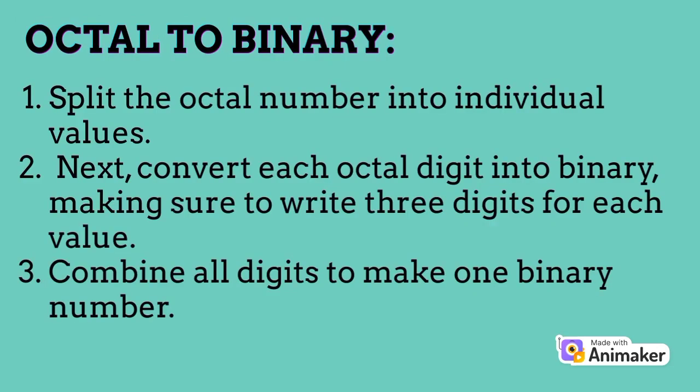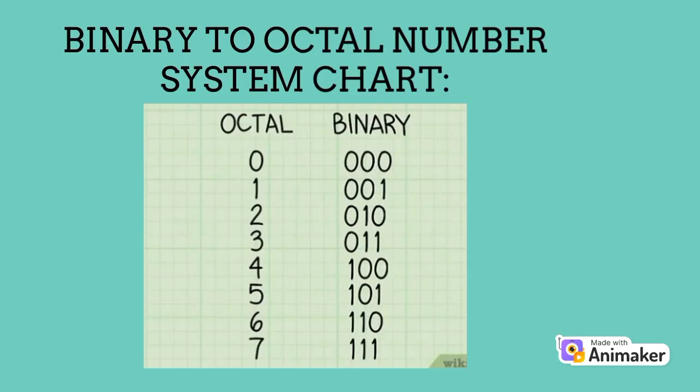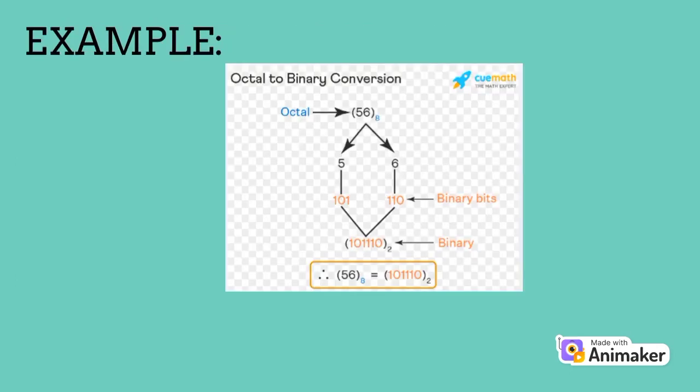Octal to binary. Split the octal number into individual values. Next, convert each octal digit into binary, making sure to write three digits for each value. Combine all digits to make one binary number. Here is a binary to octal number system chart, and an example of octal to binary conversion.